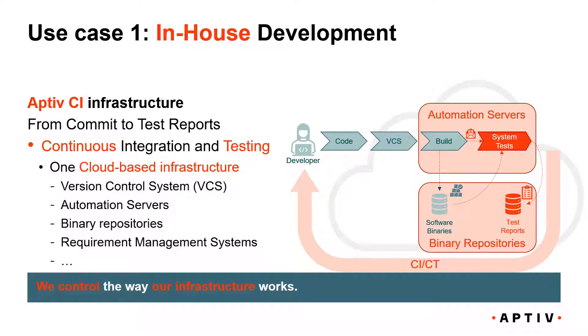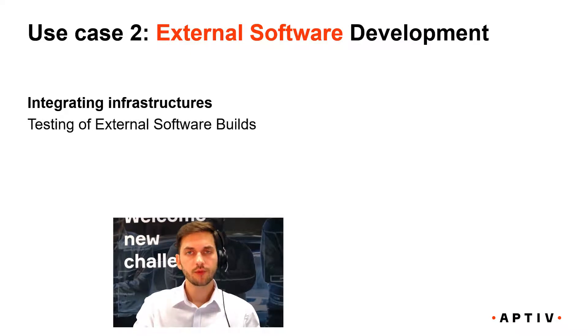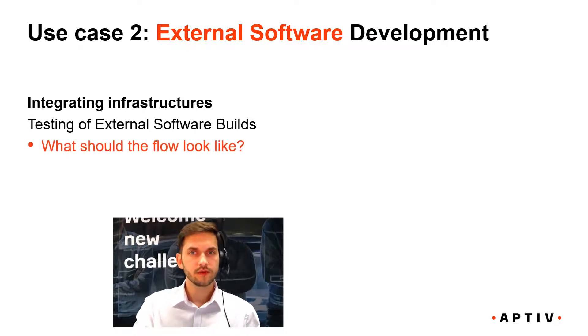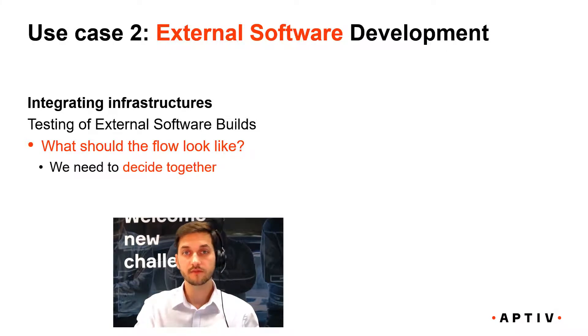But what happens if we have to work together with an external CI infrastructure? In the second use case, we have external software development but we are running system tests at Aptiv. The question is: what should the workflow look like? The answer is, we need to decide together, because the flavor that two different companies might have of what a workflow should look like in a CI-CT flow might differ a little bit. So we need to align with each other.